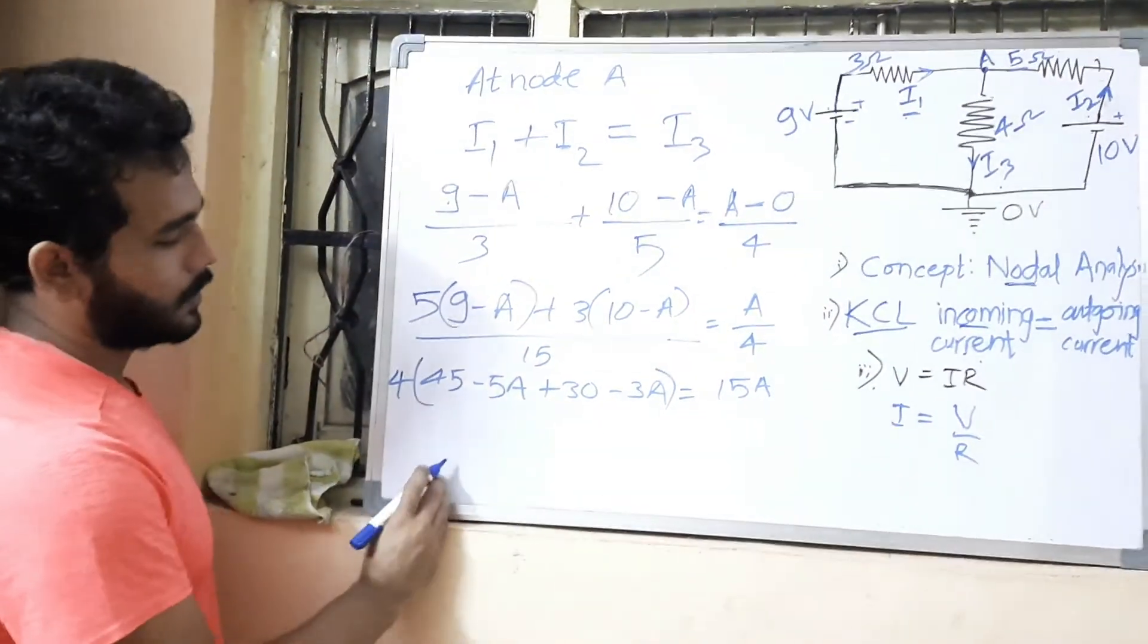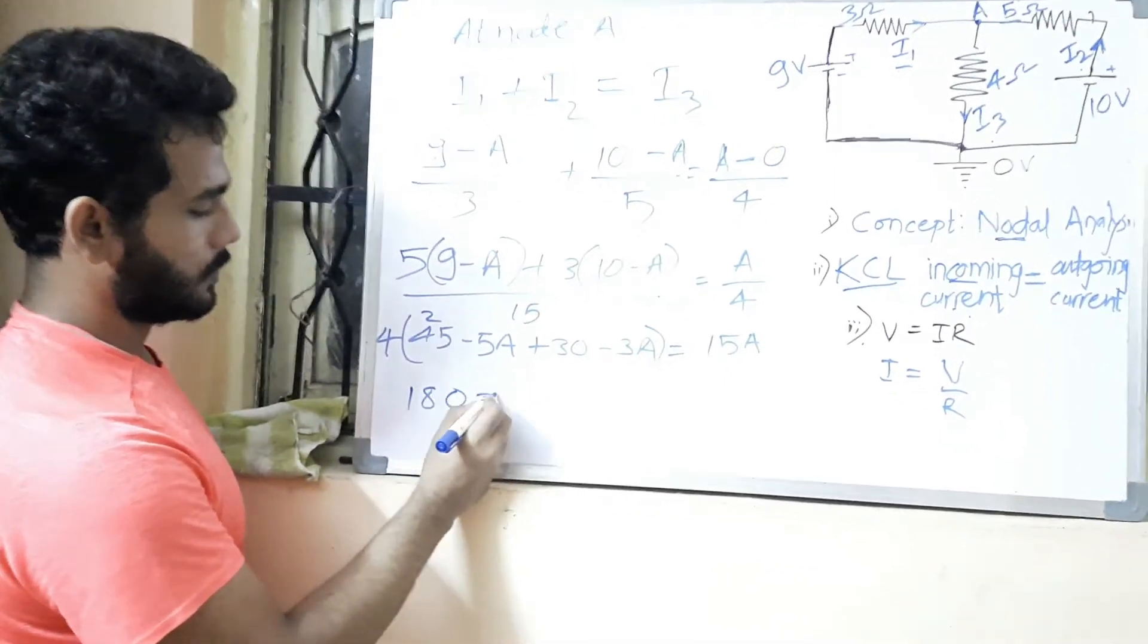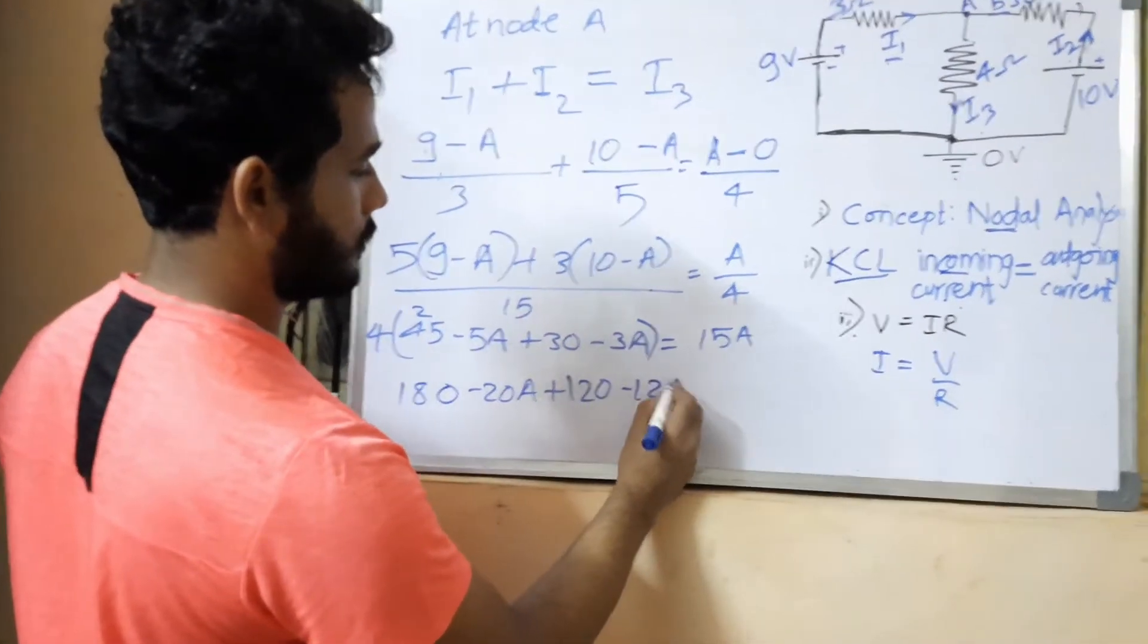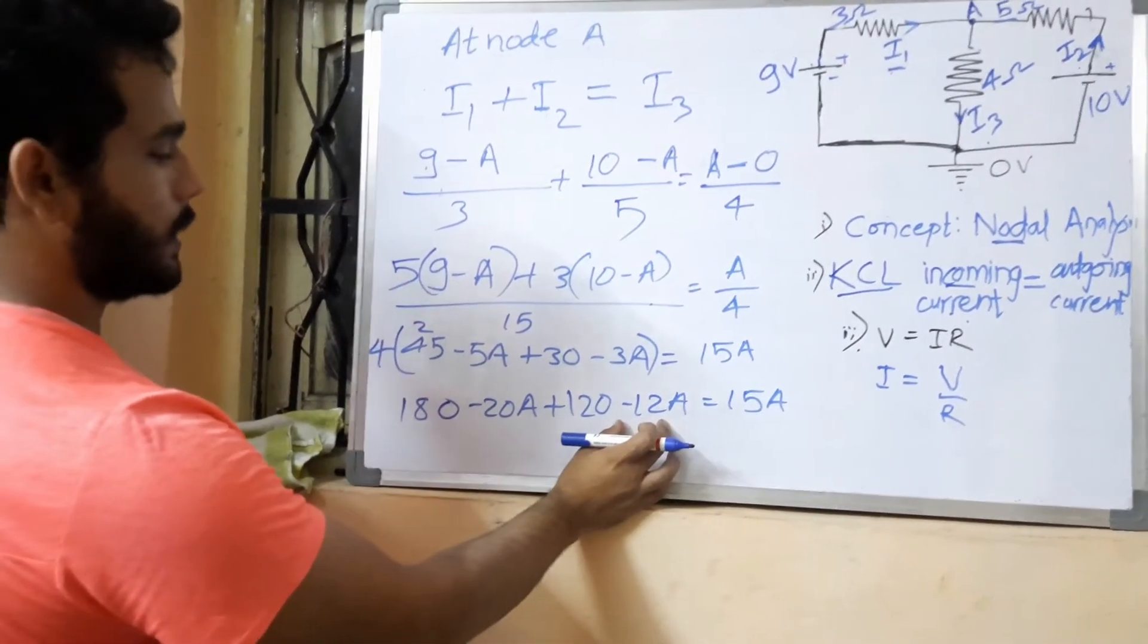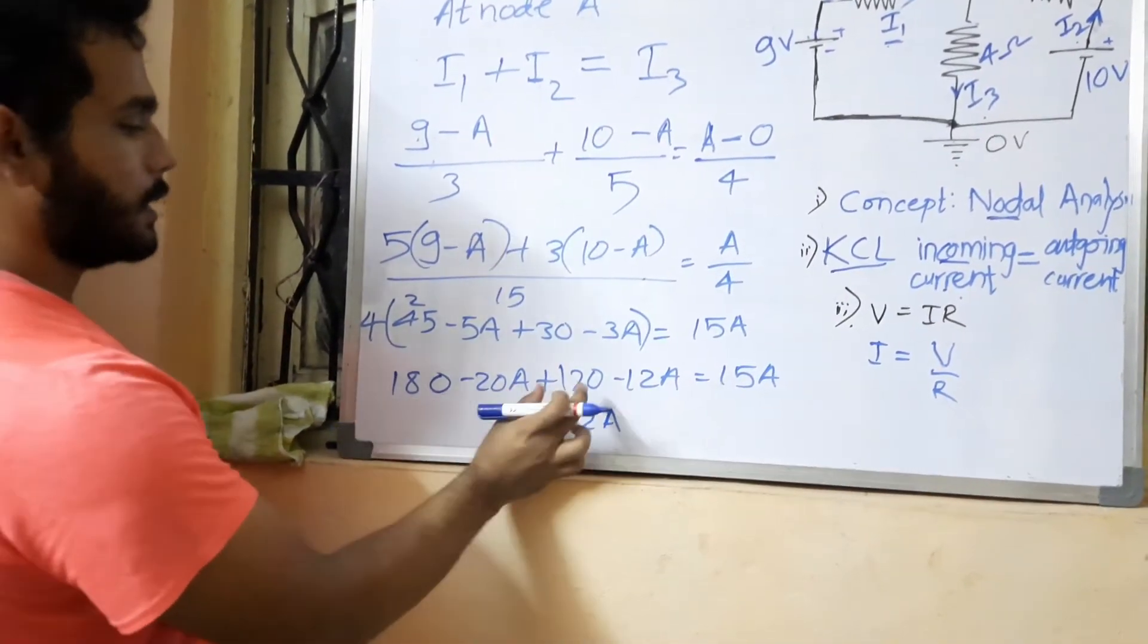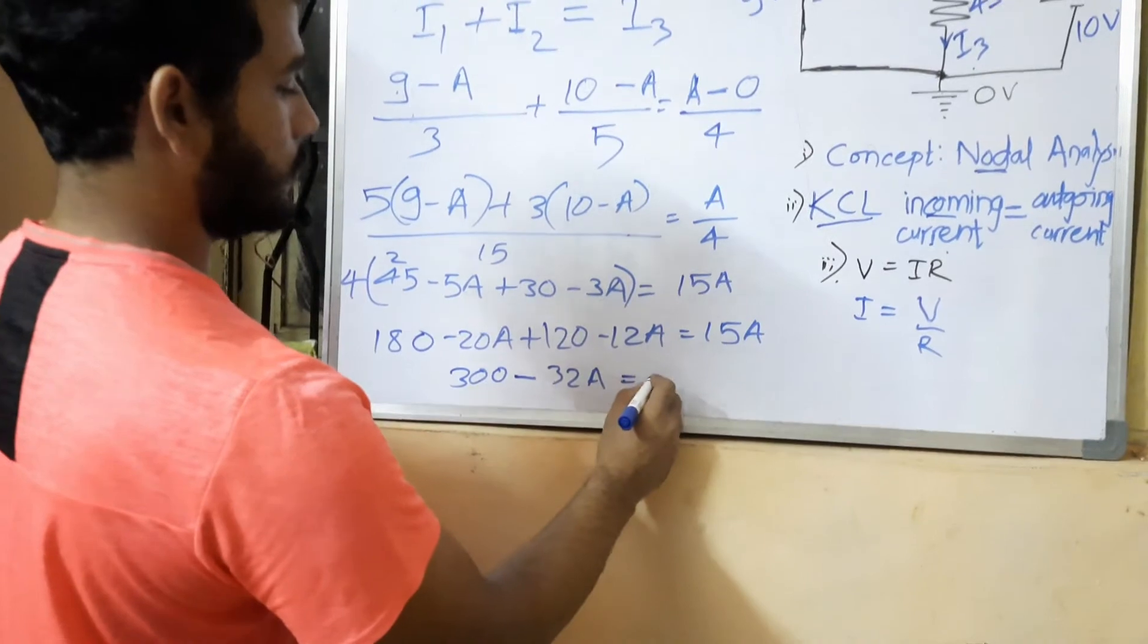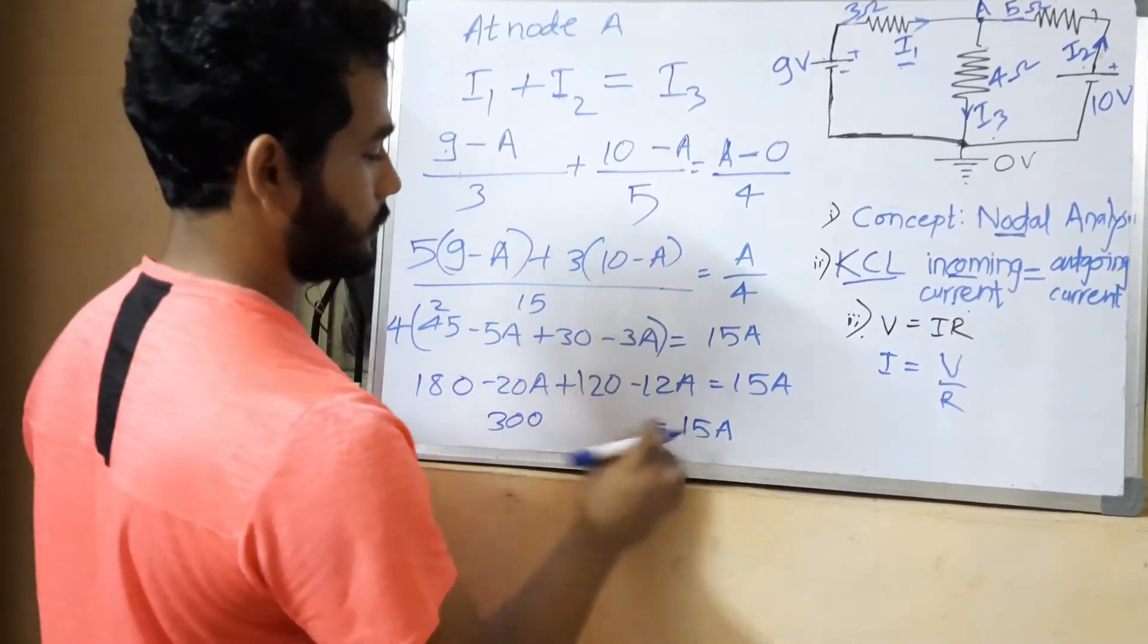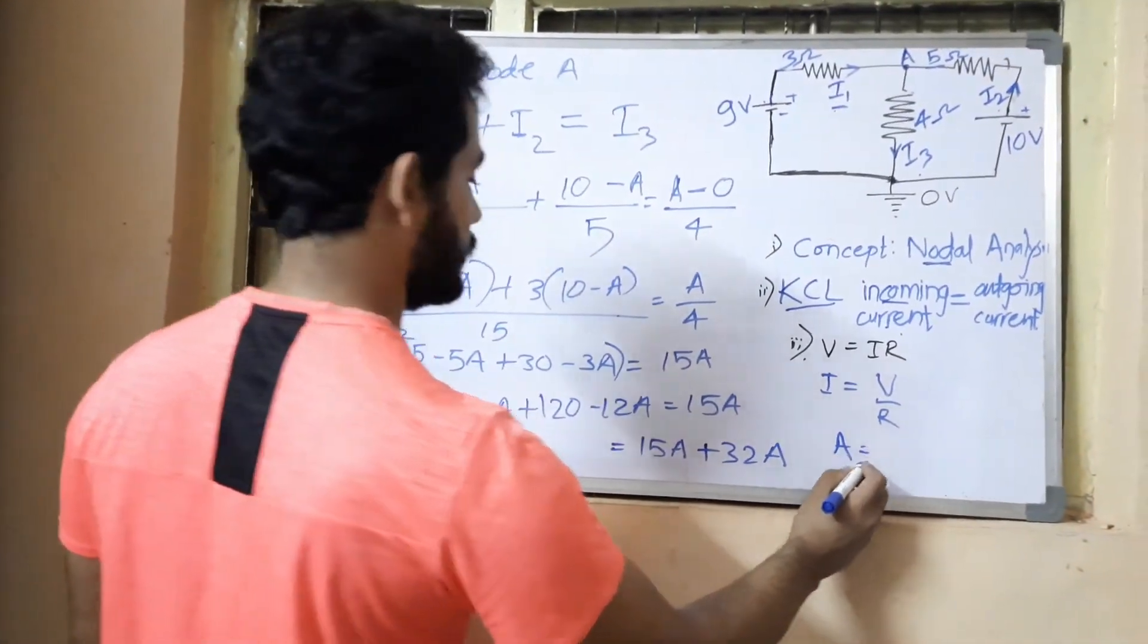Multiplying 4 to each term. So minus 28 minus 12A is minus 32A. 180 plus 120 is 300 equals 15A. I take this 32A there. So A is equal to 300 divided by 47.